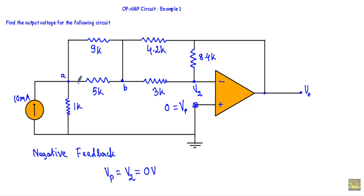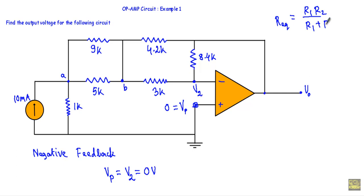I denote the inverting terminal as terminal A and the other node as terminal B. With respect to terminal A and ground, I have a current source of 10 milliamps in parallel with a 5 kilo-ohm resistor. Since they are connected in parallel, I can reduce them to a single equivalent resistance using the formula R_eq = (R1 × R2) / (R1 + R2). So R_eq = (5k × 9k) / (5k + 9k), which gives 3.2 kilo-ohms.